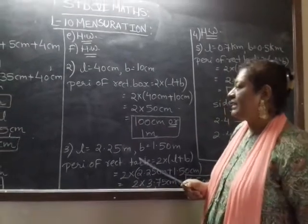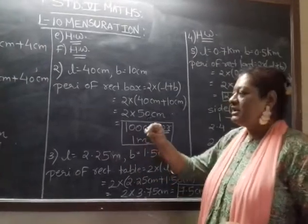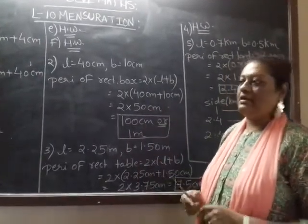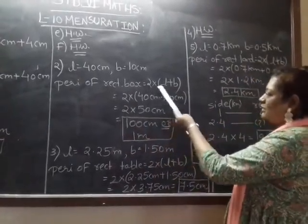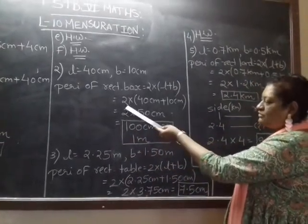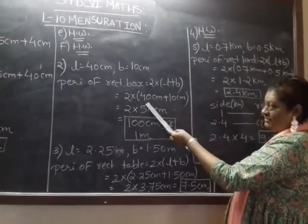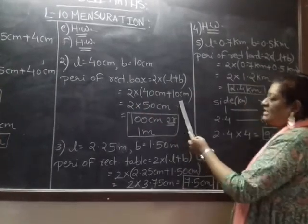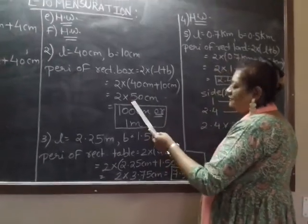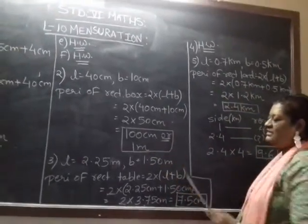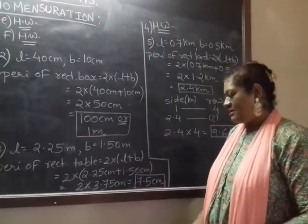Sealed all around with tape. What is the length of the tape required? Sealed means a box is sealed with the tape. So generally, the tape is fixed around the rectangular box. So perimeter of rectangular box formula is 2 into L plus B. 2 will be remaining as it is in multiplication. Inside the bracket, L is length, 40 centimeter and breadth is 10 centimeter. First add the numbers inside the brackets, 40 plus 10, 50. Remove the brackets, 50 into 2, 100 centimeter or 1 meter. Both the answers are right. Clear?